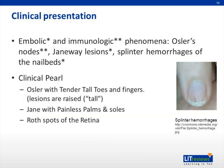When thinking about the skin and extremities, remember that Osler's nodes are tender lesions on the toes and fingers, whereas Janeway lesions are painless and found on the palms and soles. Splinter hemorrhages are small, linear lesions under the patient's nail beds. Roth spots are retinal hemorrhages.